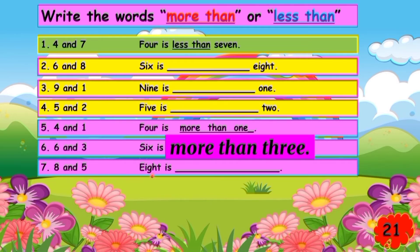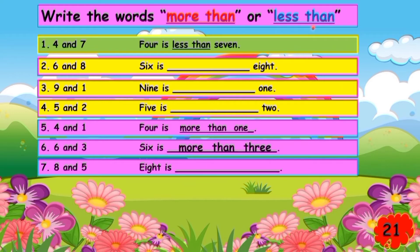Next, number seven: eight and five. So eight — is it more than or less than? That's right, eight is more than five. Write 'more than' and spell five — F-I-V-E.